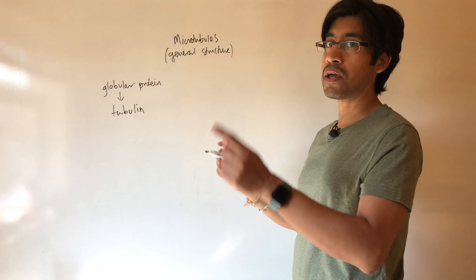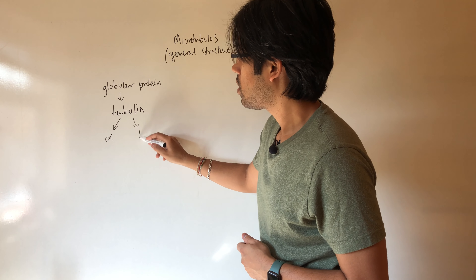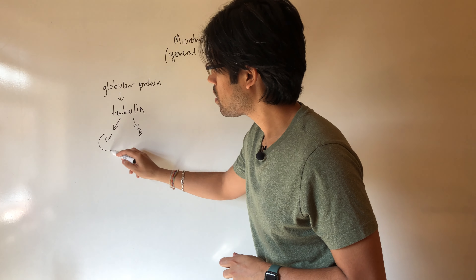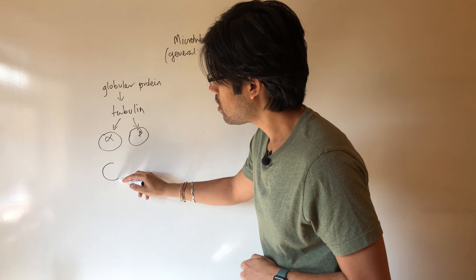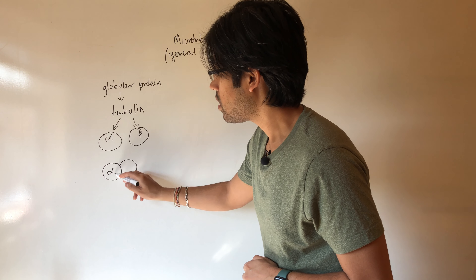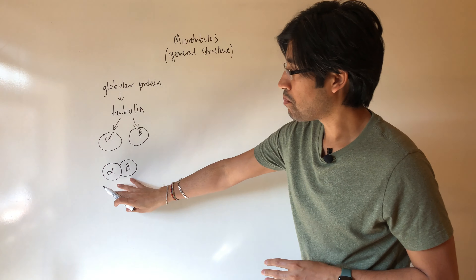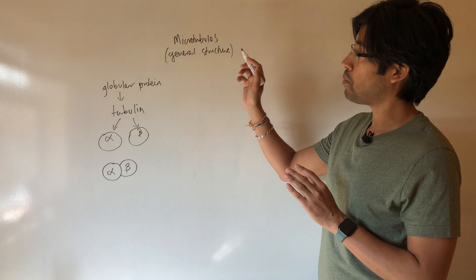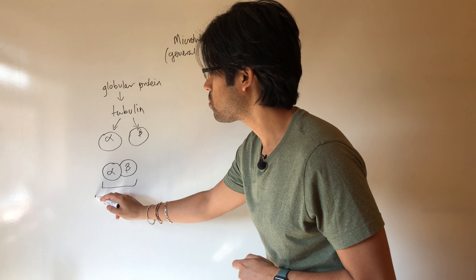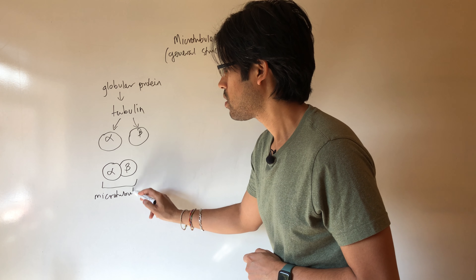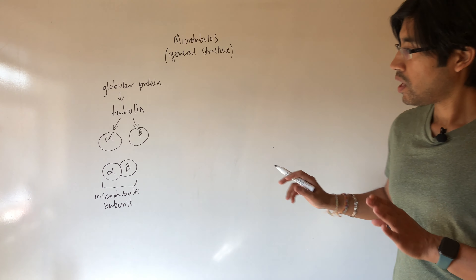Next, we have the separation of chromosomes during cell division. The aligning of the chromosomes on the equator of the cell, then the attachment of the spindle fibers to the chromosomes, and the separation of the chromosomes to the opposite poles of the cell — that is all done using microtubules as the structural framework for the spindle fibers. So chromosome separation during cell division involves spindle fibers, the centrosome, and all of that.